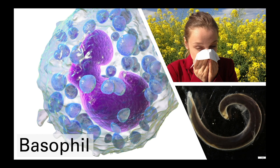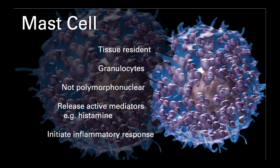Basophils also have roles against parasites and in allergy, but their emerging role in immunoregulation is becoming more important, especially in the context of hypersensitivity. Mast cells are very similar to basophils, but are tissue-resident cells. They are granulocytes, but not polymorphonuclear cells, so their nucleus takes on a more traditional shape. When mast cells are activated, they release their granule content into the surrounding area, and one of the main pharmacologically active agents here is histamine, which is responsible for the classical signs of inflammation, including the redness and swelling around the inflamed site.